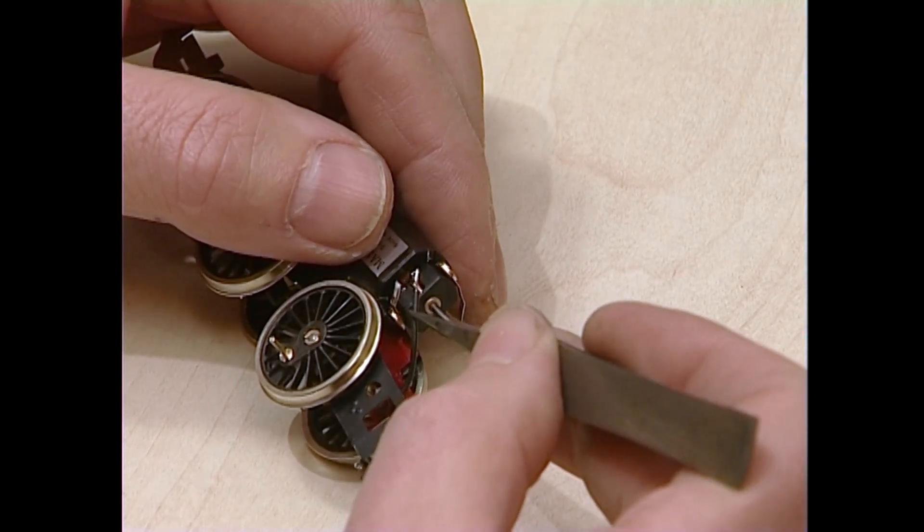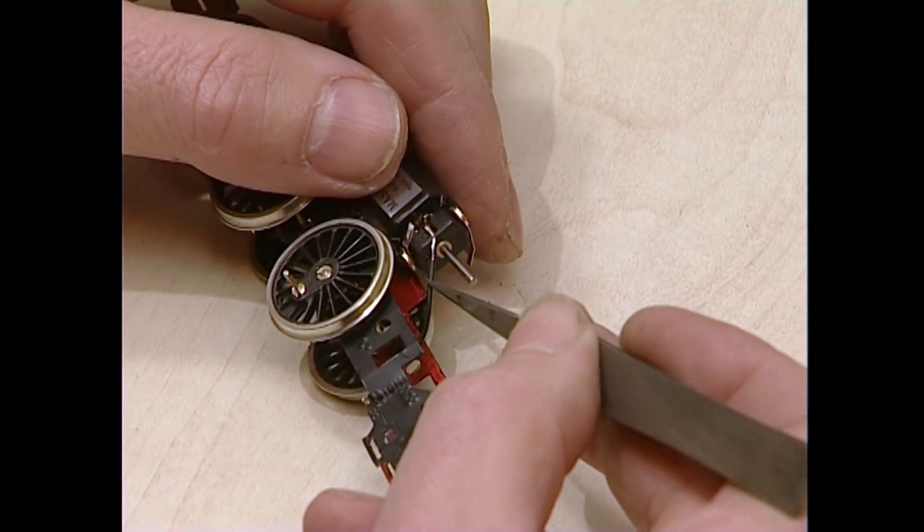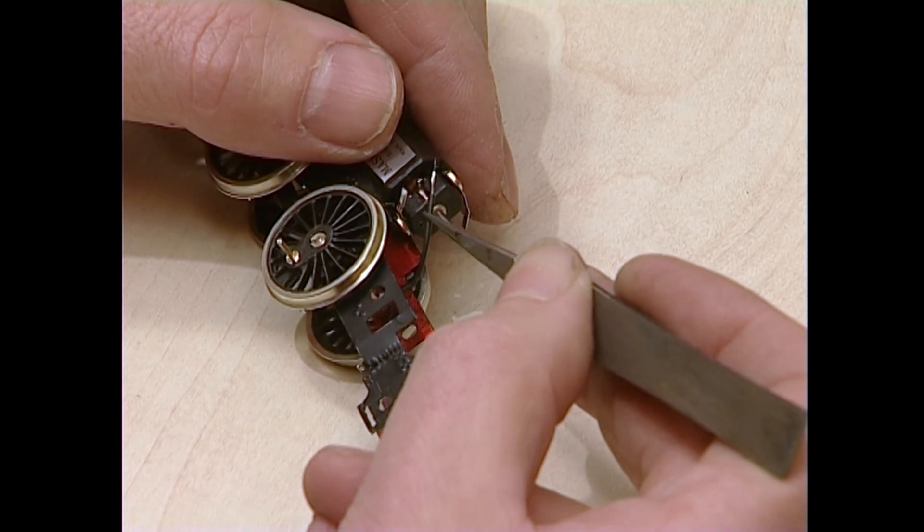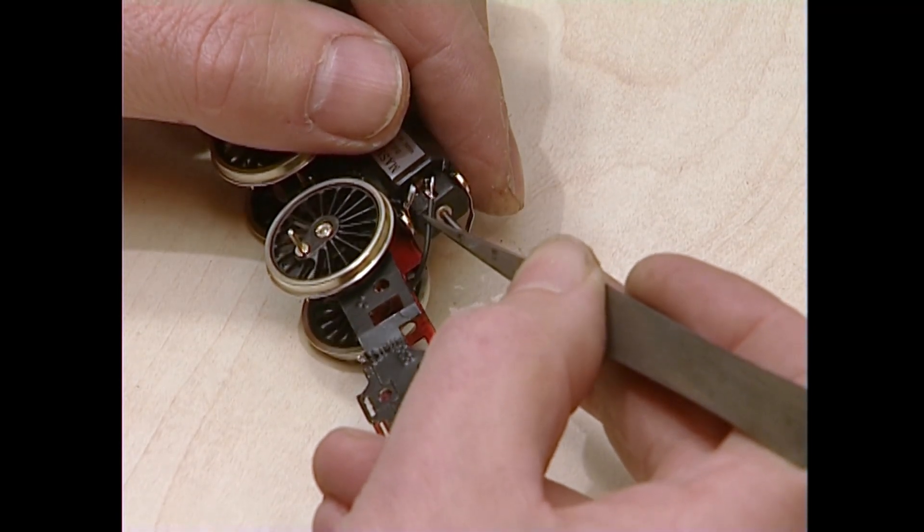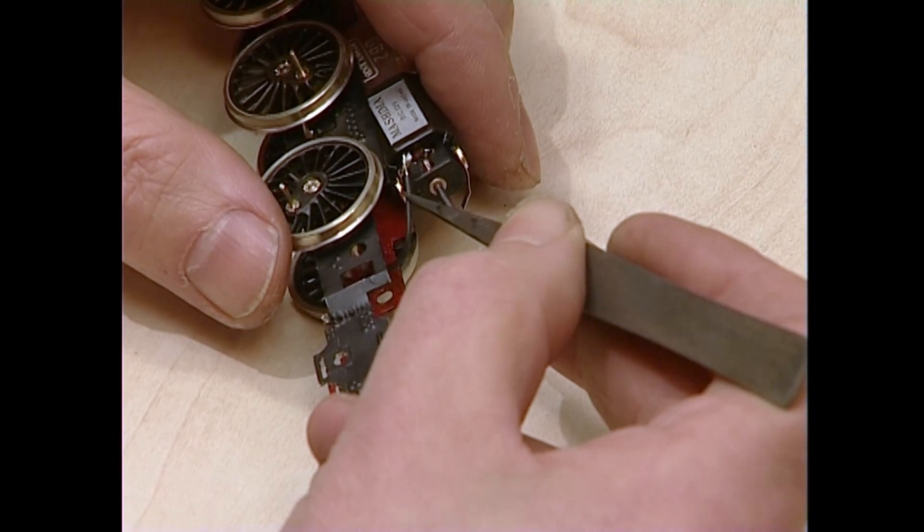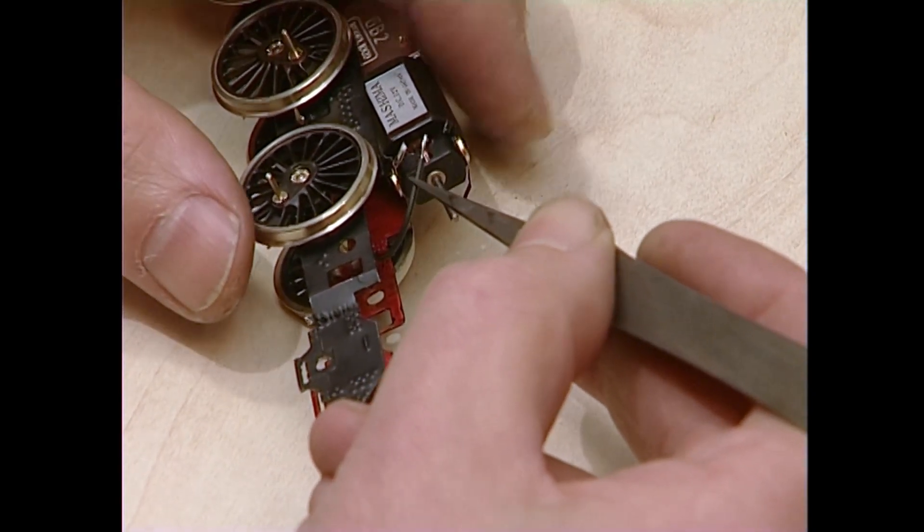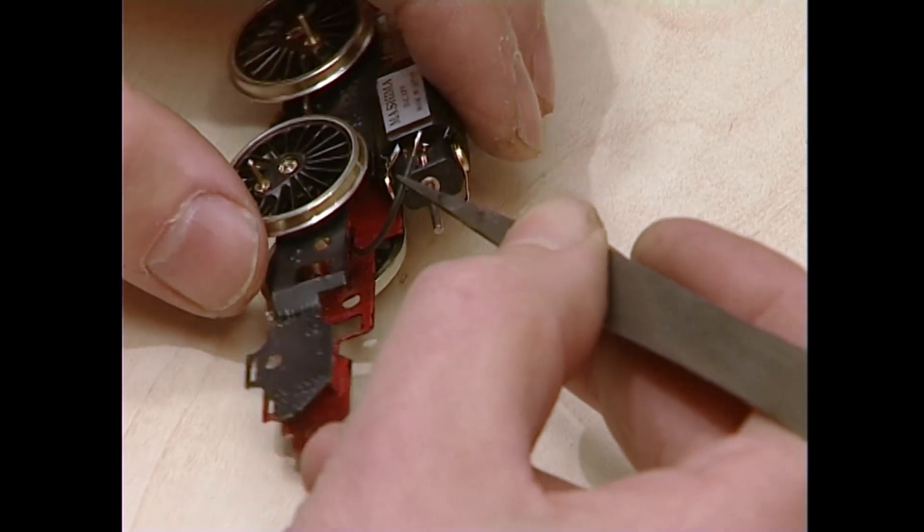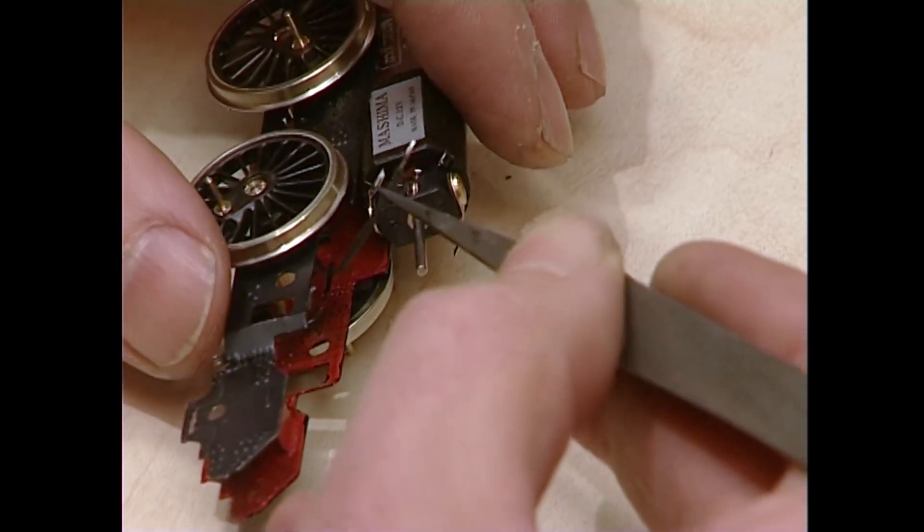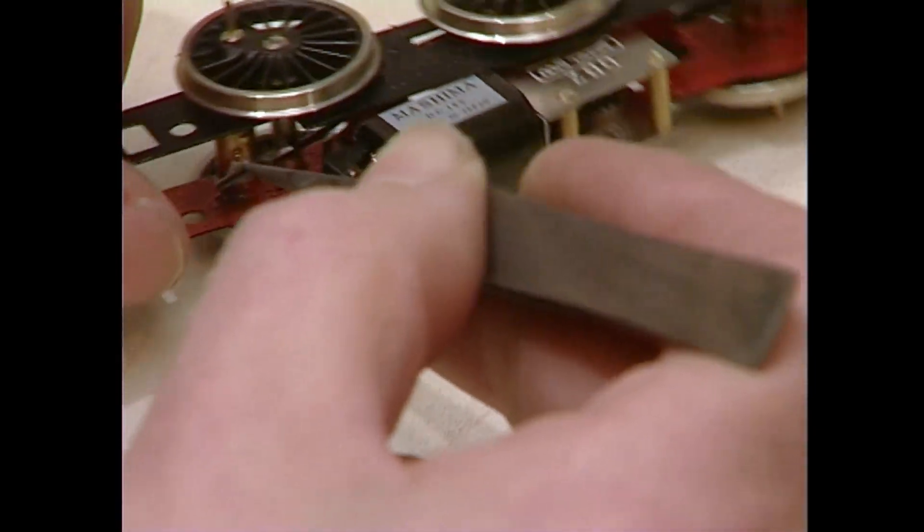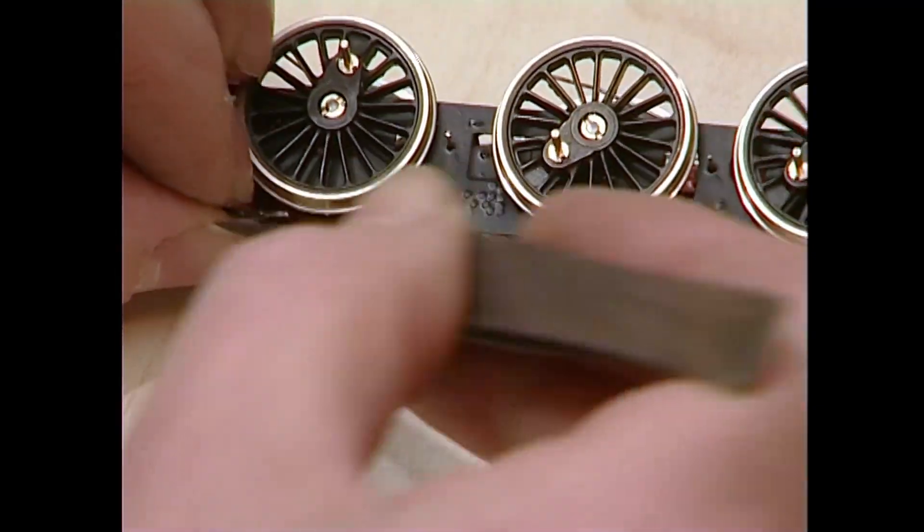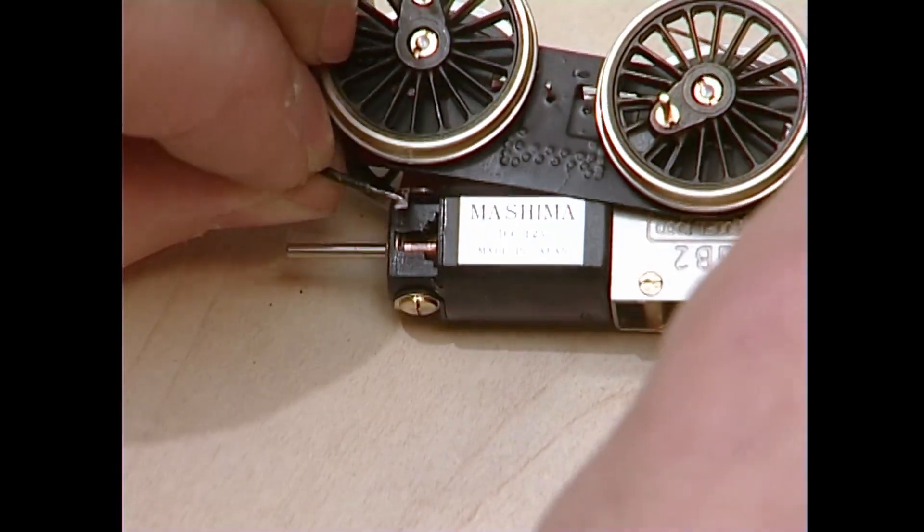But what we mustn't do is interfere with the soldering we've already done on our pickup pad. Trap it with the end of your fingernail. Sum up the courage. Add a bit of flux. A touch of solder. More than a little hope. And there you go. That way, I've now got the wire attached and ready to go to the motor.